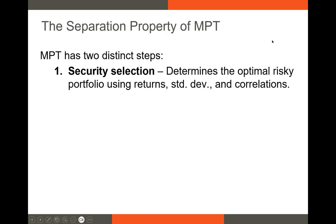Modern portfolio theory has two steps, and we're only going to focus on the first step in this video. The first step is called the security selection step — sometimes called mean-variance optimization. In the real world, this is the most important step. If people start talking about modern portfolio theory, this is the step you need to be able to discuss. This is what software will do for a financial advisor: when you plug in expected returns, it'll spit out the ideal weights of securities in a portfolio.